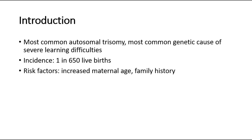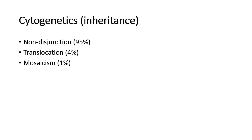The incidence varies according to maternal age, and risk factors include older mothers and a family history of Down syndrome. The cytogenetic inheritance can be three main types: non-disjunction, which is the most common and accounts for around 95% of cases, and the others include translocation and mosaicism.